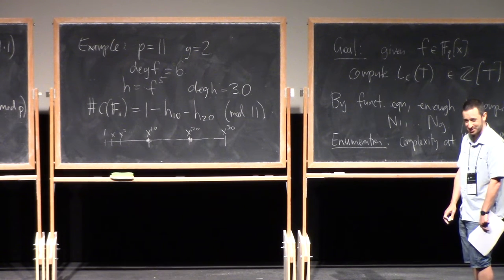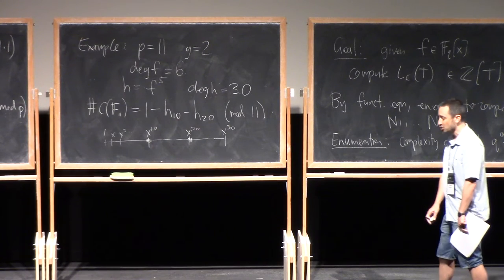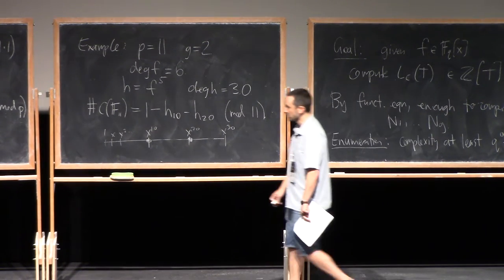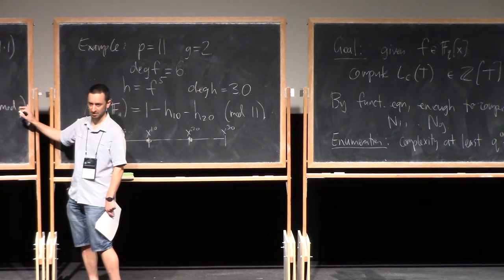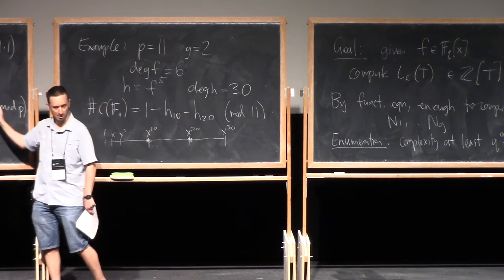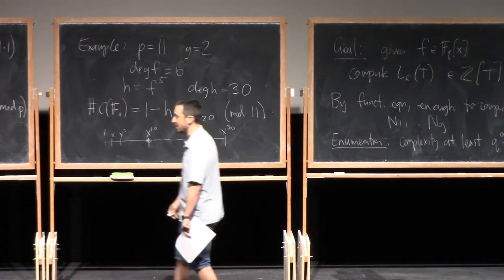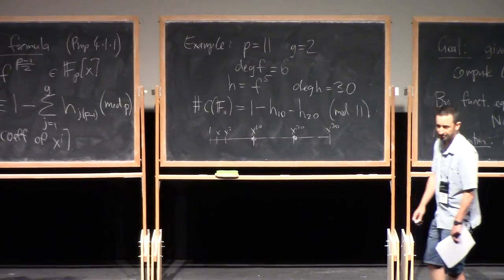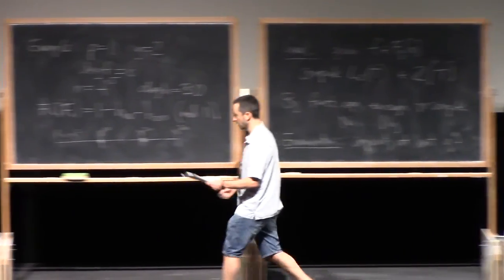Now, in section 8 of the notes, which I suspect we will not get to this week, there is a more general formula like this, which will count the number of points modulo a power of P. So, it's a more complicated formula with more terms, but you can get the result modulo a power of P, and that's another way of solving that problem. But I probably won't get to that, unfortunately.